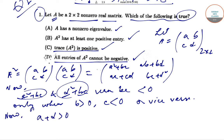given that A is a nonzero matrix. If a+d > 0, and we multiply by b, then b(a+d) will also be greater than zero if b > 0.